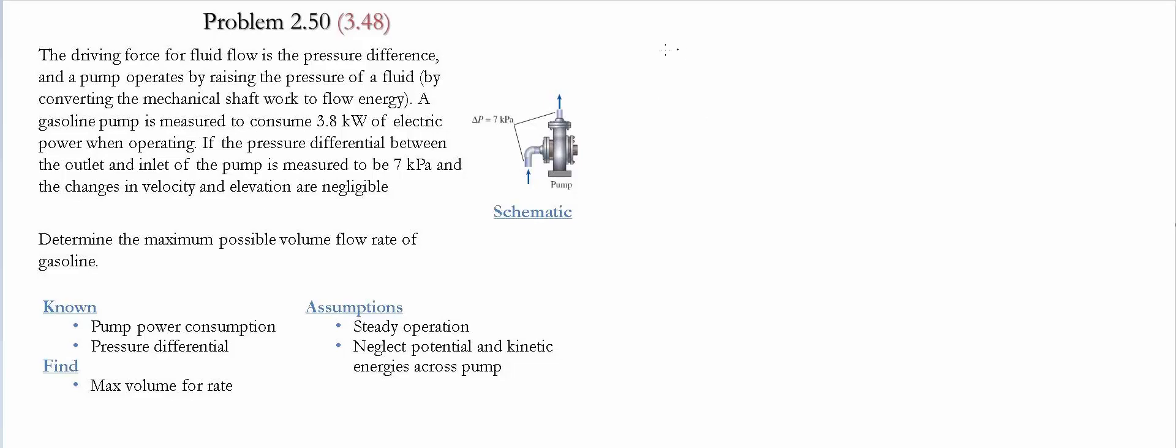To start the problem, we'll begin with an energy balance written in terms of rate of energy. We start with the rate of energy going into the system minus the rate of energy leaving the system. This equals the change of energy in the system as a function of time. Since we have a steady process, this value equals zero.